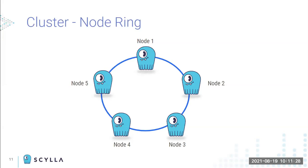In practice, Scylla and other NoSQL databases not only partition data between nodes, they also replicate it. A common replication factor is three, meaning every data element is stored on three nodes. Even with replication, not every node holds all the data — only three or four nodes hold any given piece of information. The database manages which data elements live on which nodes, and that is determined by the partition key, which is the first data modeling aspect we'll discuss.